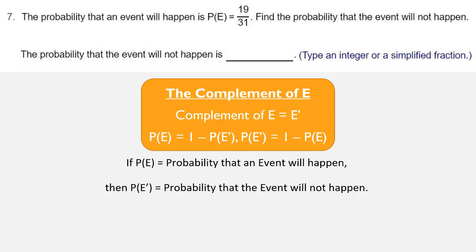So, according to the statement above, the probability of E is 19 over 31. Therefore, probability of E prime is 1 minus the probability of E, so that's going to be 1 minus 19 over 31.